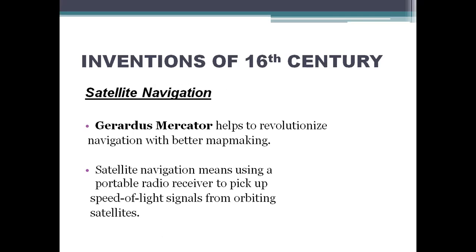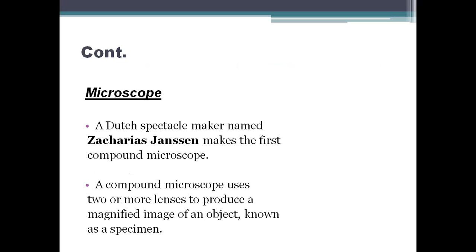Next are inventions made in the 16th century. We discuss two main inventions. First is satellite navigation. Mercator helped revolutionize the navigation system with better mapping. Satellite navigation means using a portable radio receiver to pick up speed-of-light signals from orbiting satellites. Second is the microscope. Jensen made the first compound microscope. A compound microscope uses two or more lenses to produce a magnified image of an object, known as the specimen.